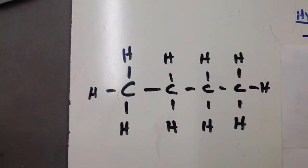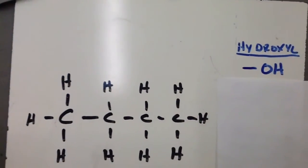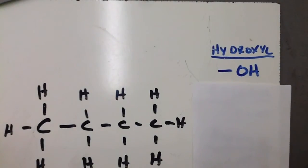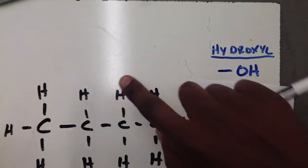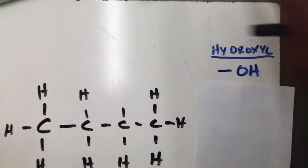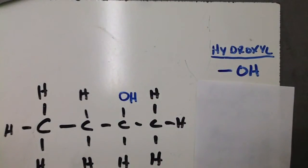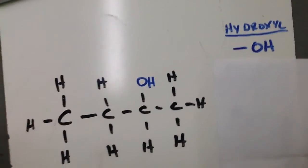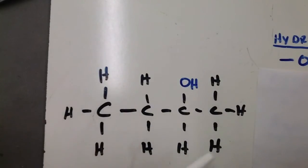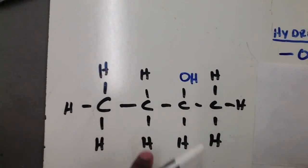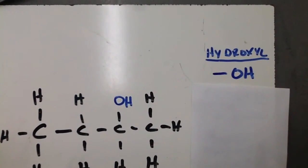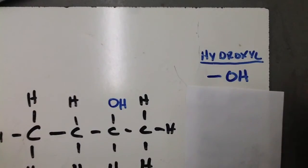The first functional group we'll talk about is called the hydroxyl group, which contains an oxygen atom and a hydrogen atom (–OH). For example, we could take a hydrogen in a hydrocarbon and substitute it with the hydroxyl group, giving us a substituted hydrocarbon. Instead of having only hydrogen and carbon, we've substituted one hydrogen with this functional group.